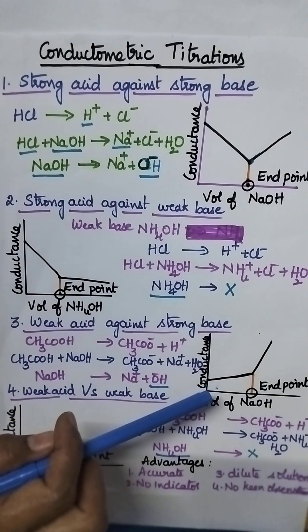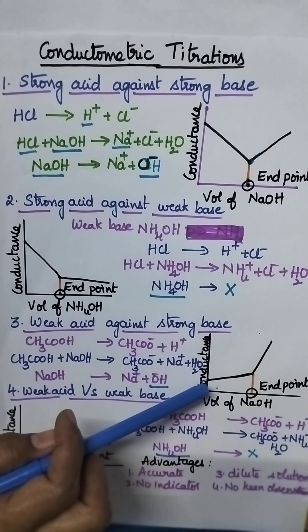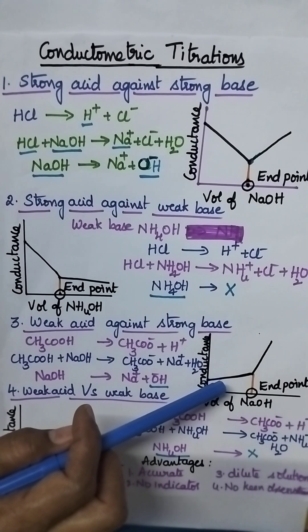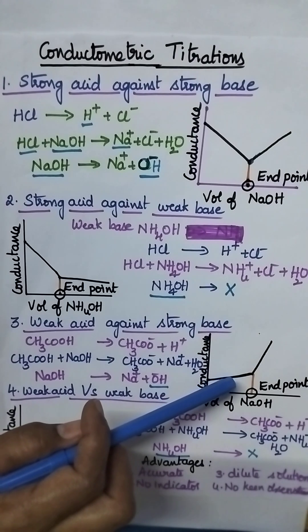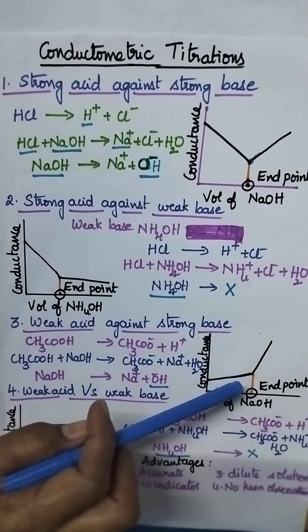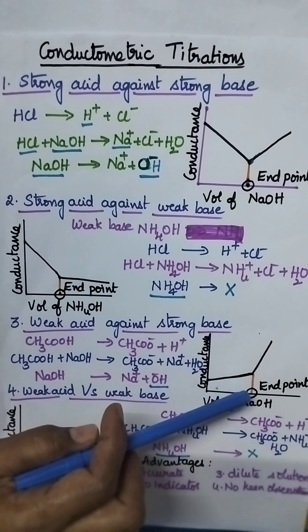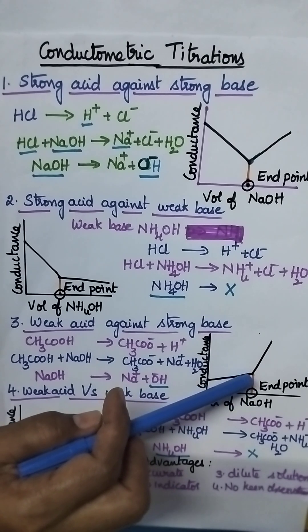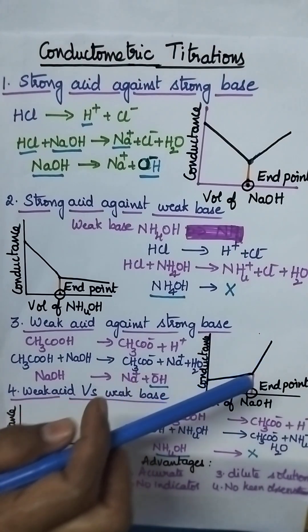Coming to weak acid against strong base — initially the conductance of weak acid is very low. On the addition of strong base, slowly the conductance increases. On reaching the end point, there is a steep rise in the conductance.